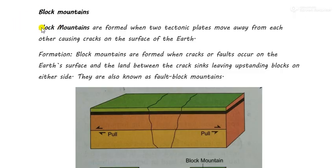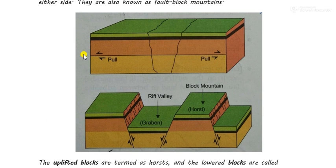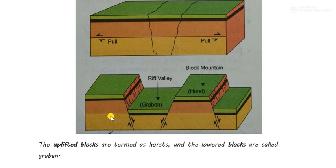Please copy this definition and formation explanation, which you can write in the exam. You can also follow your book or write this explanation if it is easier for you. For better understanding, please draw this diagram. When a block mountain is formed, landforms like this are created — land that has sunk down and land that has been uplifted.